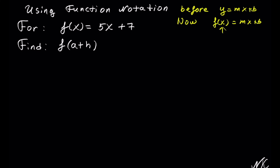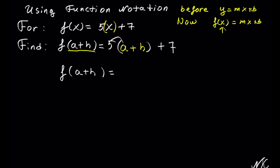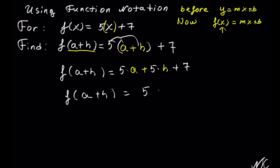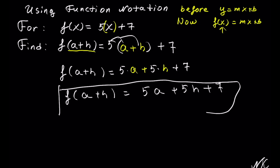Here we have f of x equals to 5x plus 7, and we need to calculate f of a plus h. So instead of x in the original function, we are going to plug in a plus h. Using the original function 5x plus 7 with a plus h substituted for x, we distribute 5 into the parentheses and get 5 times a plus 5 times h plus 7. So f of a plus h is equal to 5a plus 5h plus 7. We do not have like terms, so this is our solution.